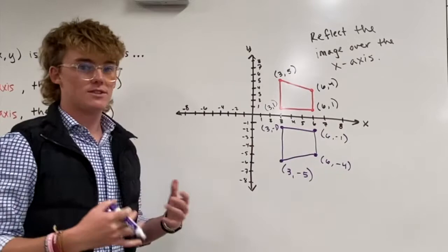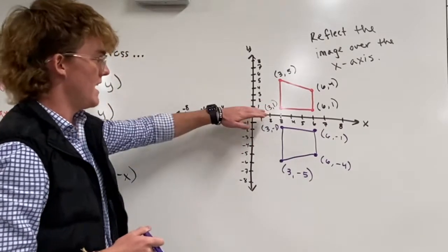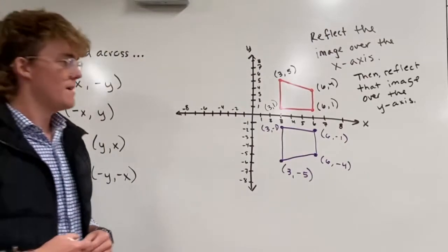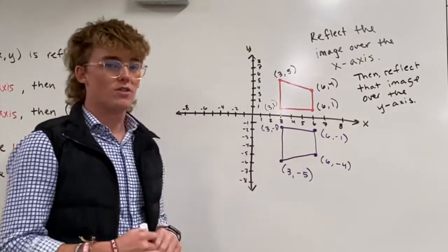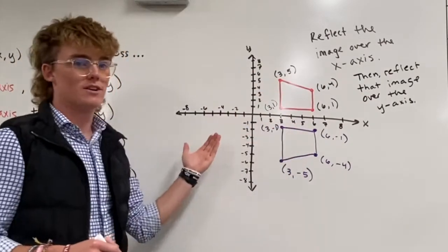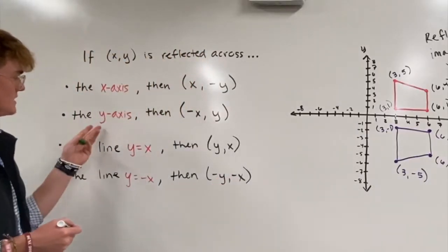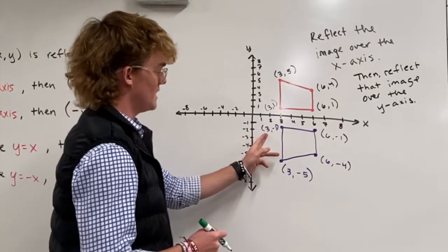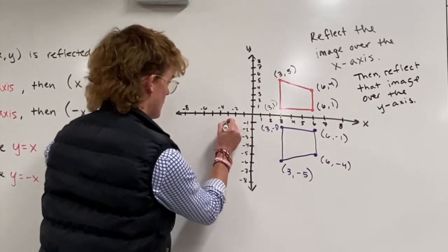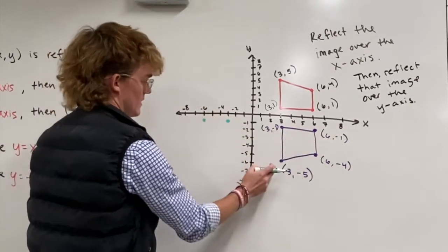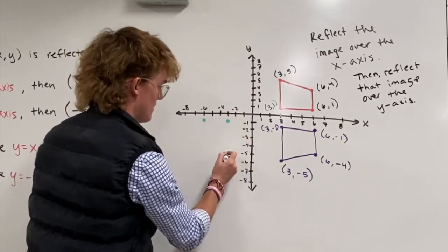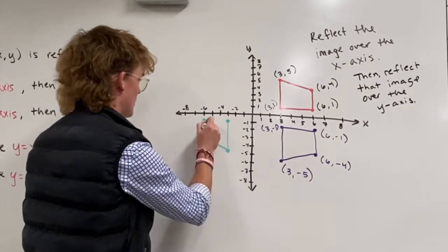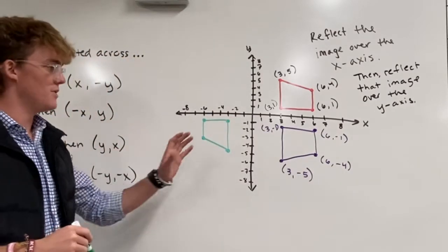This looks very clear in terms of visualizing a reflection — if you view the x-axis as a mirror, you can see the image is perfectly flipped over. Expanding on this, we're now going to reflect that image over the y-axis. Remember the pattern: when you reflect over the y-axis you change the sign of the x value. So the points become (-3, -1), (-6, -1), (-3, -5), and (-6, -4).